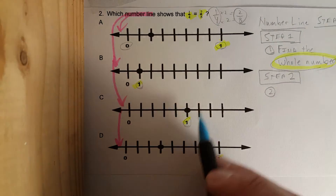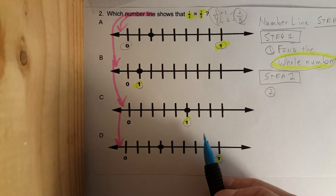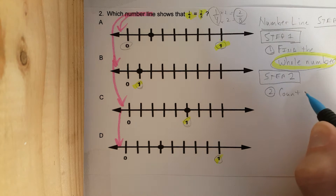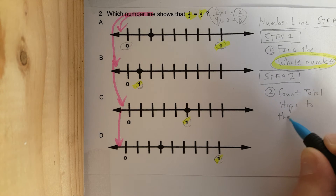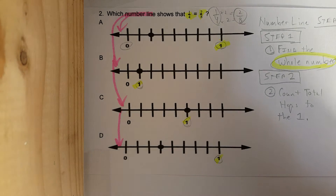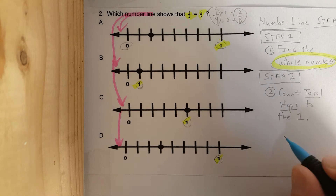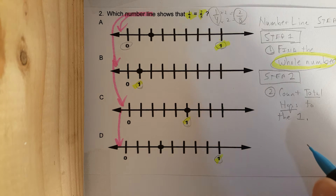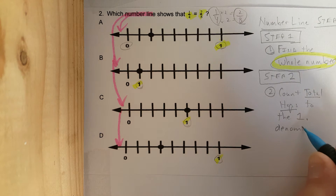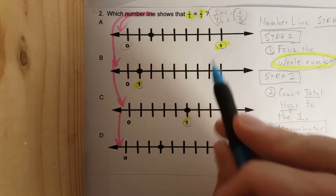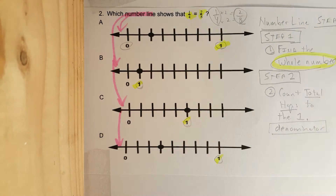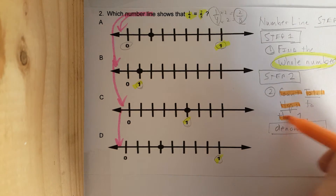We found where the whole number — which is one — is on the number line. Step two: count total hops to the one. The keyword is total hops. This will be the bottom number, also known as the denominator, which we learned from yesterday.